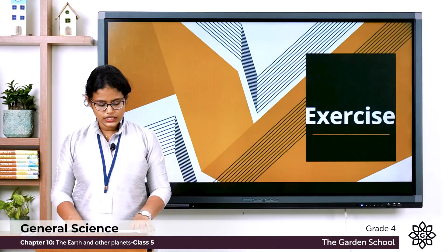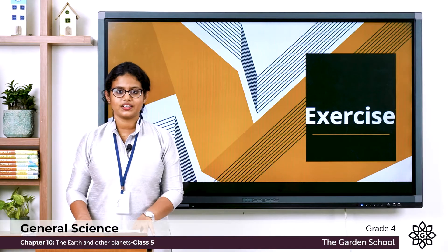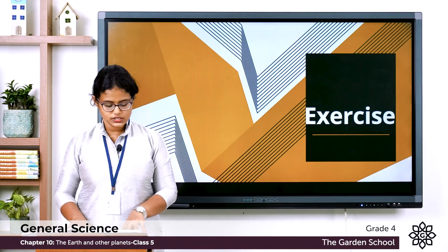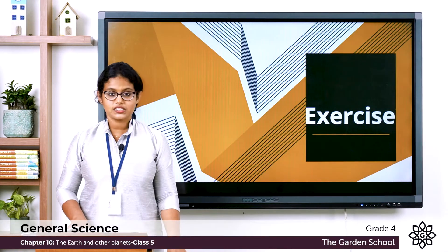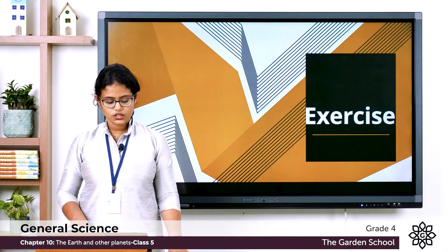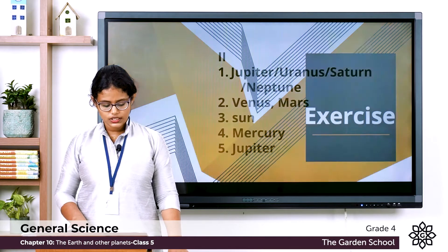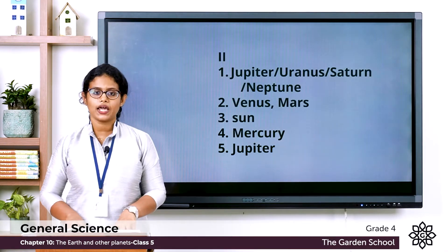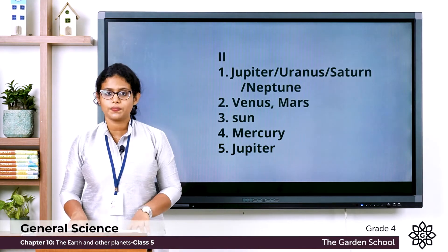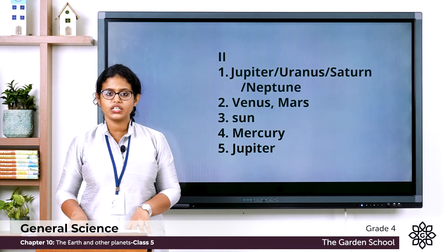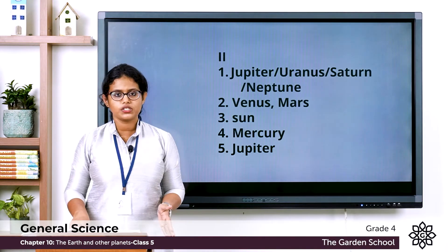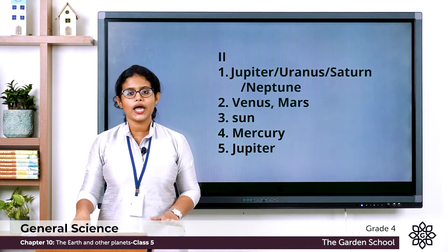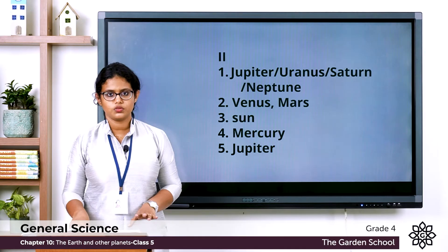Moving to the next one — the second exercise: Fill in the blanks. The first one: Dash is an outer planet. We have four outer planets — Jupiter, Saturn, Uranus, and Neptune.